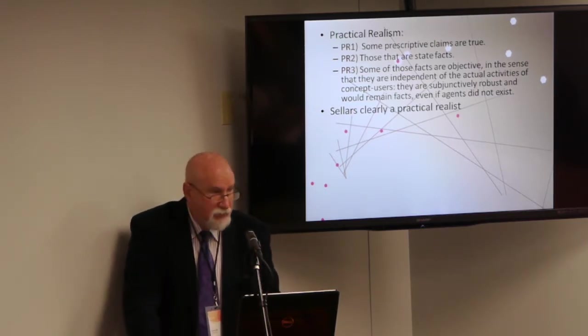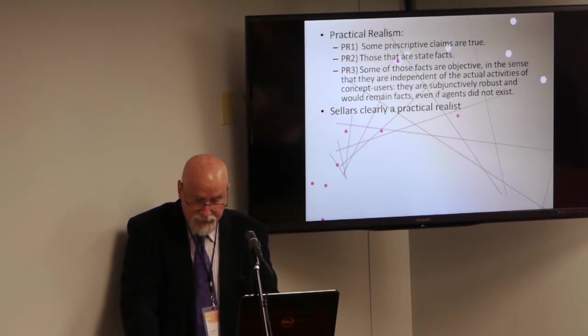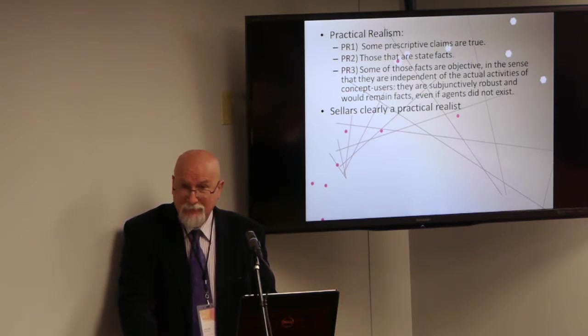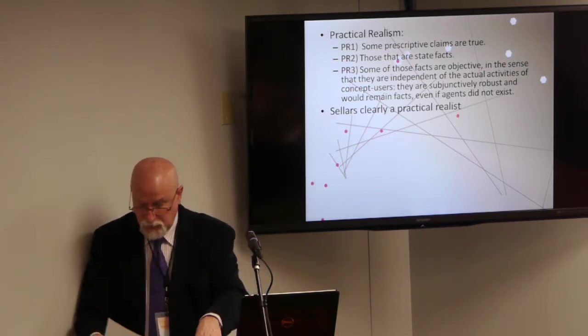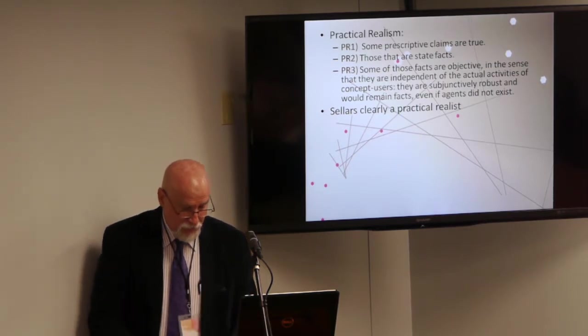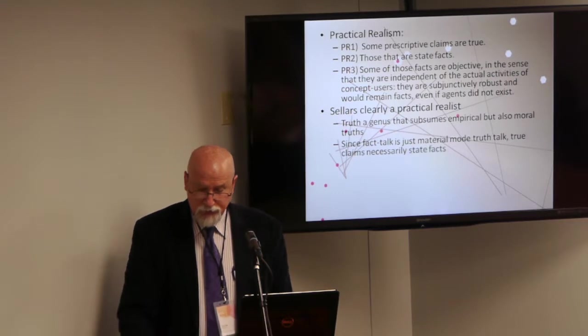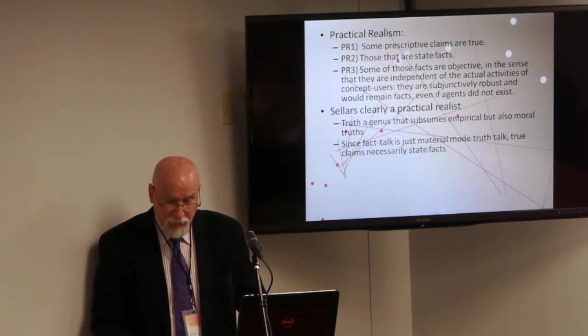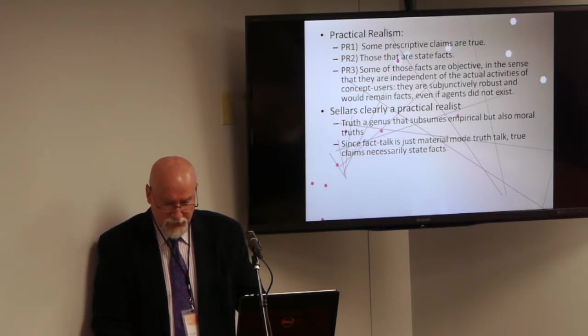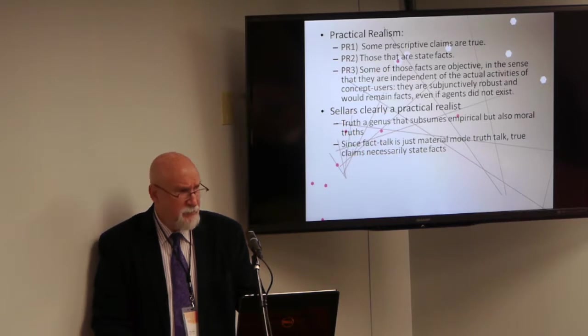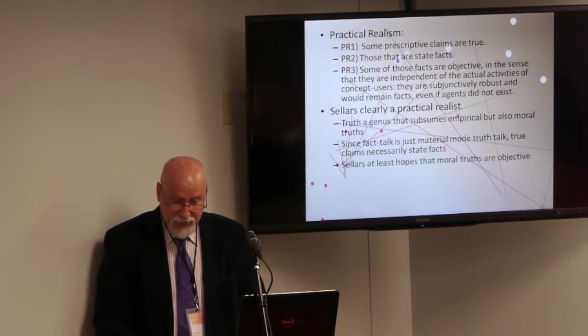So, described thusly, it seems pretty clear that Sellars was a practical realist. He is explicit that on his conception, truth is a genus that accompanies such species as empirical truth, mathematical truth, and moral truth. That's in Chapter 4 of Science and Metaphysics. He is equally explicit that fact talk is just material mode truth talk, so necessarily true claims state facts. Finally, as I read it, the final chapter of Science and Metaphysics is a search for grounds to claim the objectivity of morality. It's not clear he actually thinks he succeeds there, because he admits it remains incomplete, but at least his goal is unmistakable. He would like to claim them to be objective.